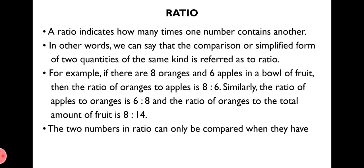The two numbers in a ratio can only be compared when they have the same unit. This is a necessary condition — we can give the ratio of two numbers only when both numbers have the same unit. If they don't, we must convert them into the same unit first.